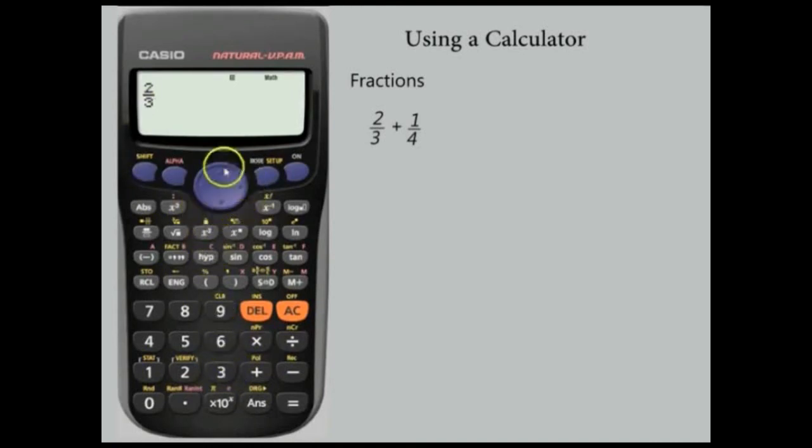Again, we use the central button to move the cursor to the right. We now have a full cursor. Press plus, and use the fraction button to enter 1 over 4. So 1, move down, and 4. Now press equal, and there is our answer, 11 over 12.